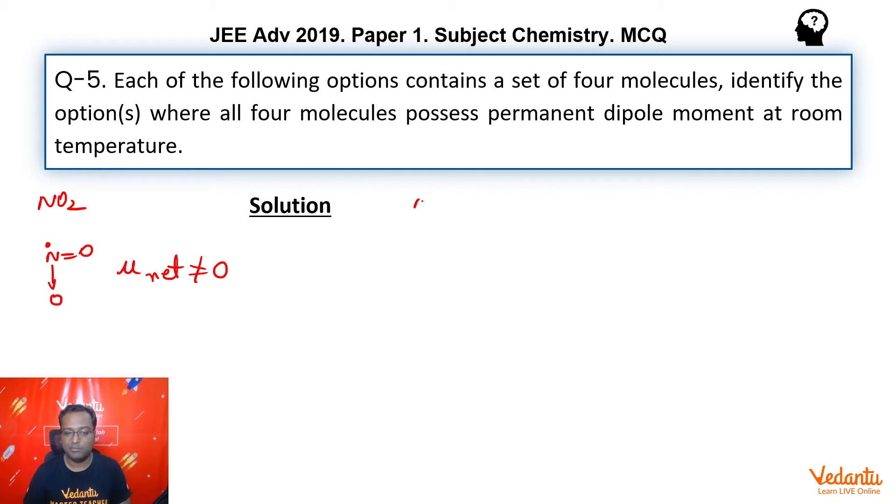Next, we had ammonia as the option. So, ammonia, we know that this is pyramidal in shape. The dipole moment net vector will not be equal to zero. And this will be in this direction. It will not be equal to zero. They all will get added up. So, mu net again not equal to zero.